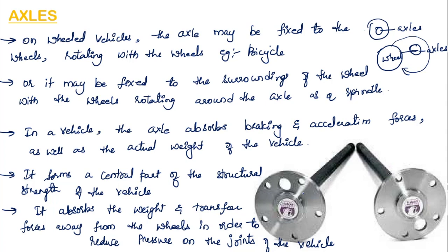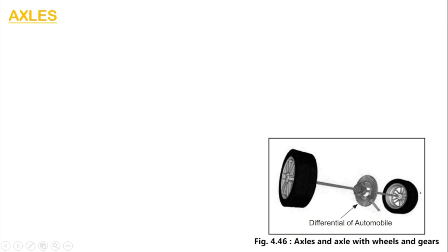Here we can see how the axle appears. This is the shaft, and these are the bushes or bearings. We can see a clear picture of the axle and the axle with wheels and gears. These are the two wheels, and this is the differential of the automobile — we have seen what the differential actually means in our previous videos.